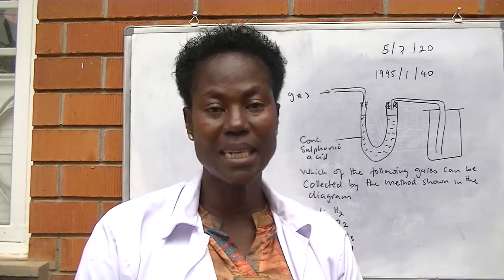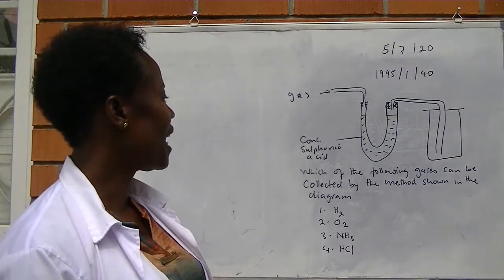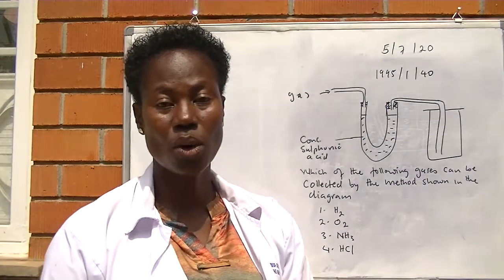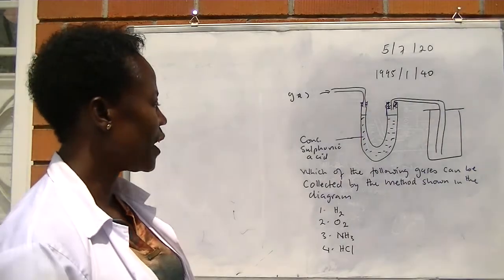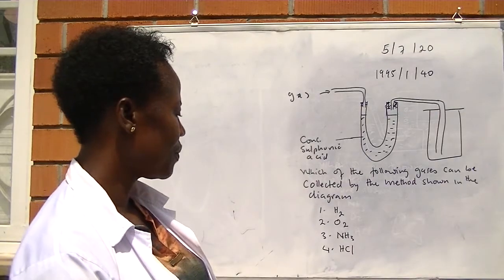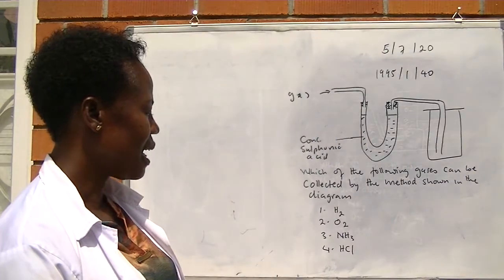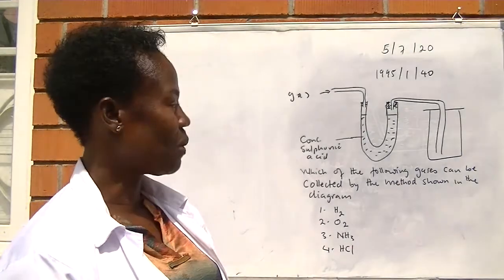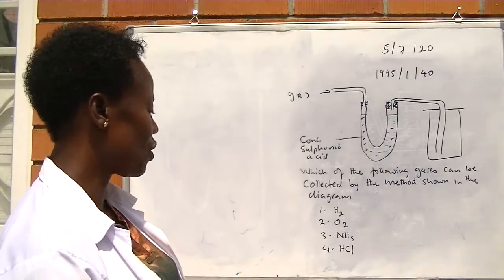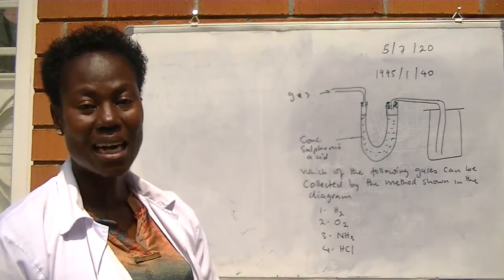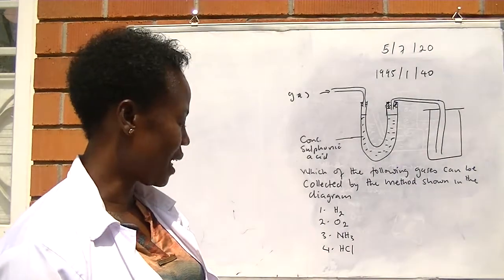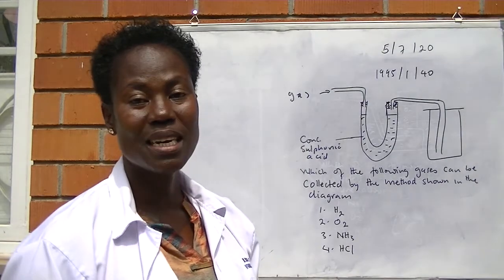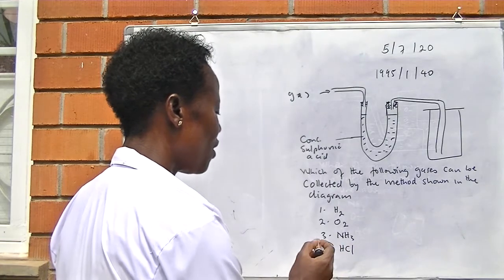The last example is from 1995, number 4, paper 1. We are given a diagram which shows the gas, concentrated sulfuric acid as a drying agent, and then the gas is collected by downward delivery or upward displacement of air. Which one of the following gases can be collected by the method shown in the diagram? Number 1, hydrogen. Number 2, oxygen. Number 3, ammonia. Number 4, hydrogen chloride gas. Number 1, hydrogen is the lightest gas. Automatically we can't collect it by that method. And also number 2, oxygen. Number 3, ammonia. Ammonia is an alkaline gas which can react with the concentrated sulfuric acid to produce a salt and water. So the last alternative is 4, which is hydrogen chloride. It can be collected by the above method, downward delivery, because it is denser than air. So the alternative is 4, which is B.